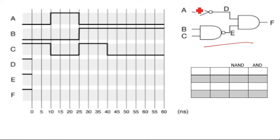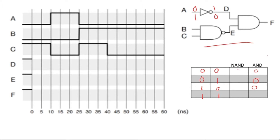For a NOT gate: if you apply zero you get output one, and if you apply one you get output zero. For a two-input NAND gate and AND gate, the input combinations are zero-zero, zero-one, one-zero, and one-one. For AND: zero-zero gives zero, zero-one gives zero, one-zero gives zero, and one-one gives one. For NAND, you invert all those outputs: zero-zero gives one, zero-one gives one, one-zero gives one, and one-one gives zero. This is the truth table for the NAND and AND gates.